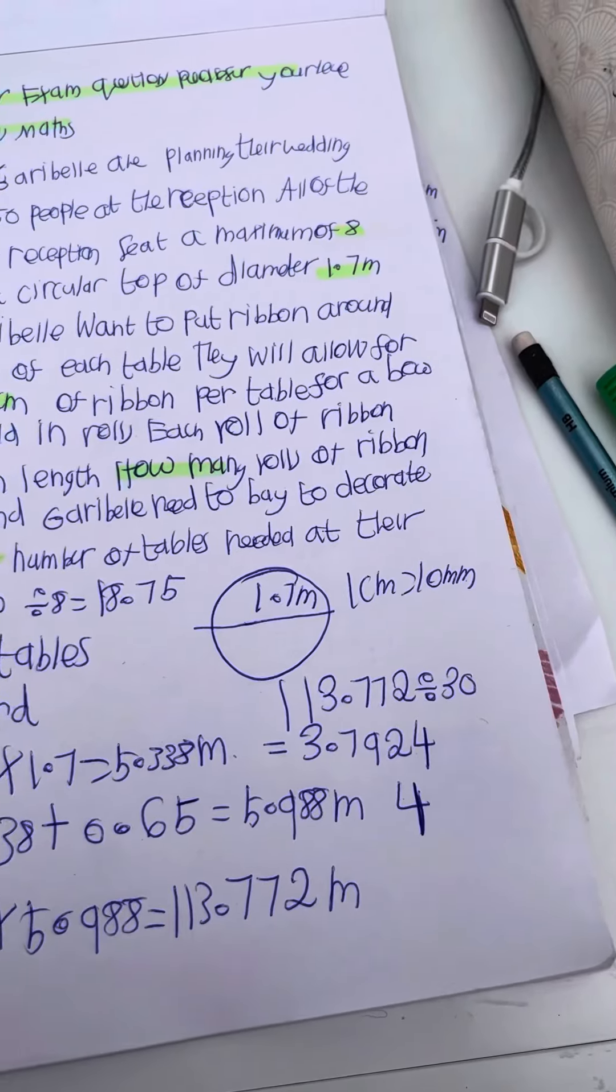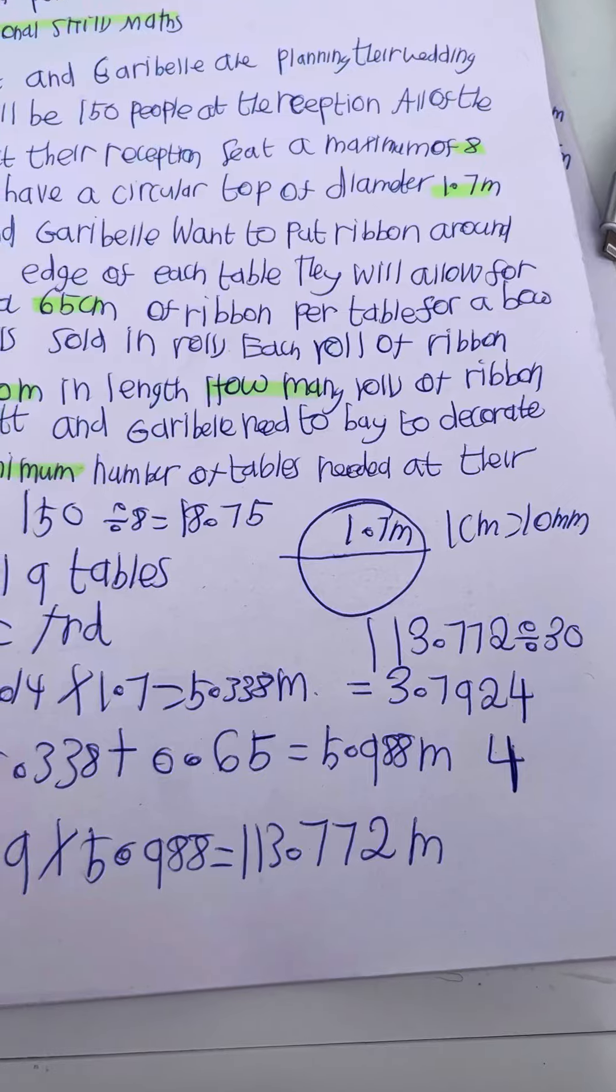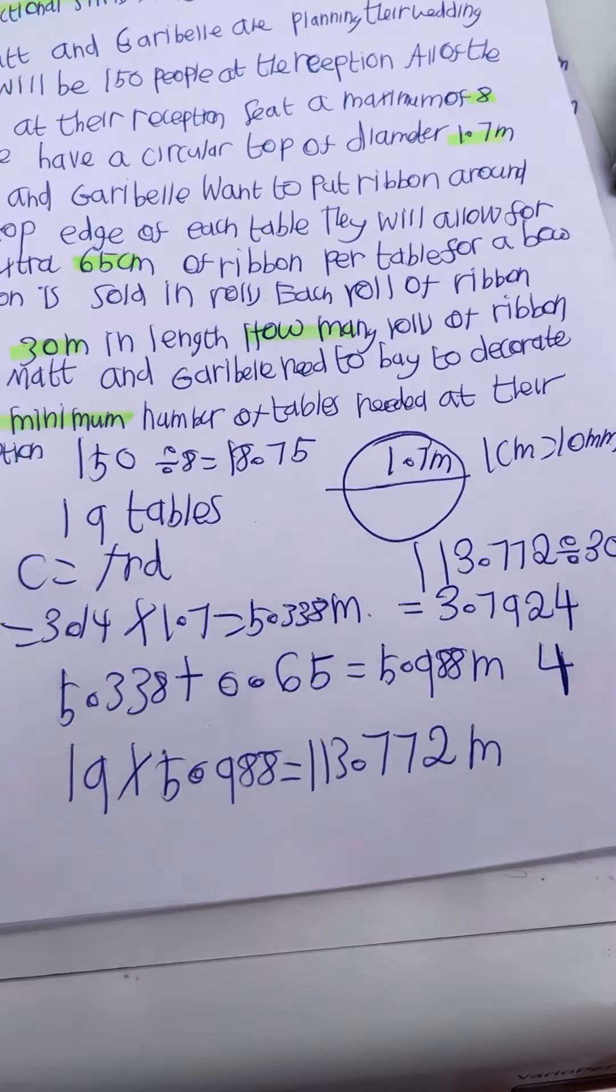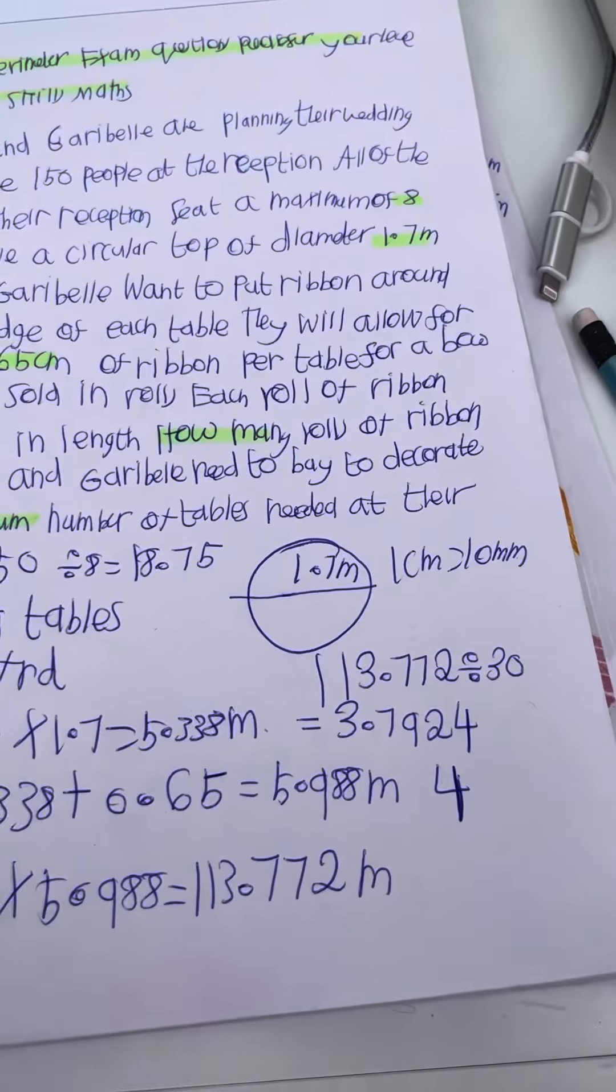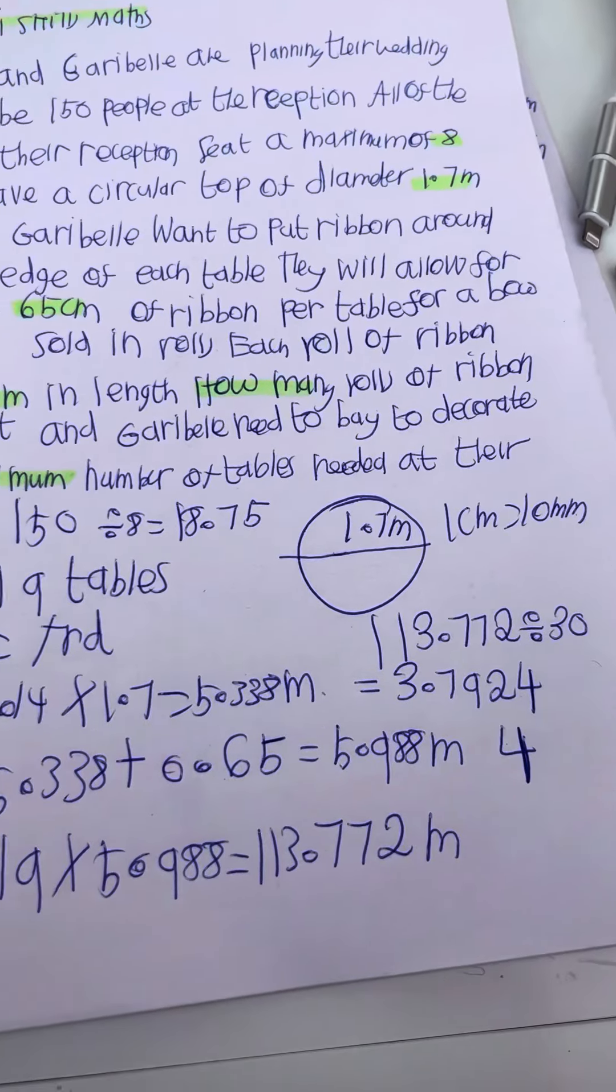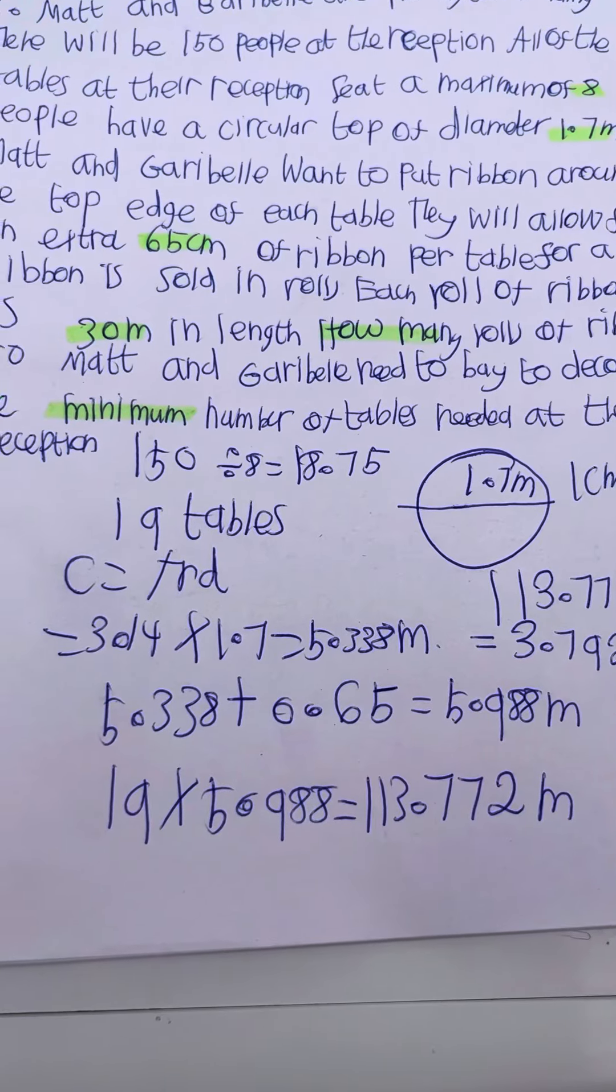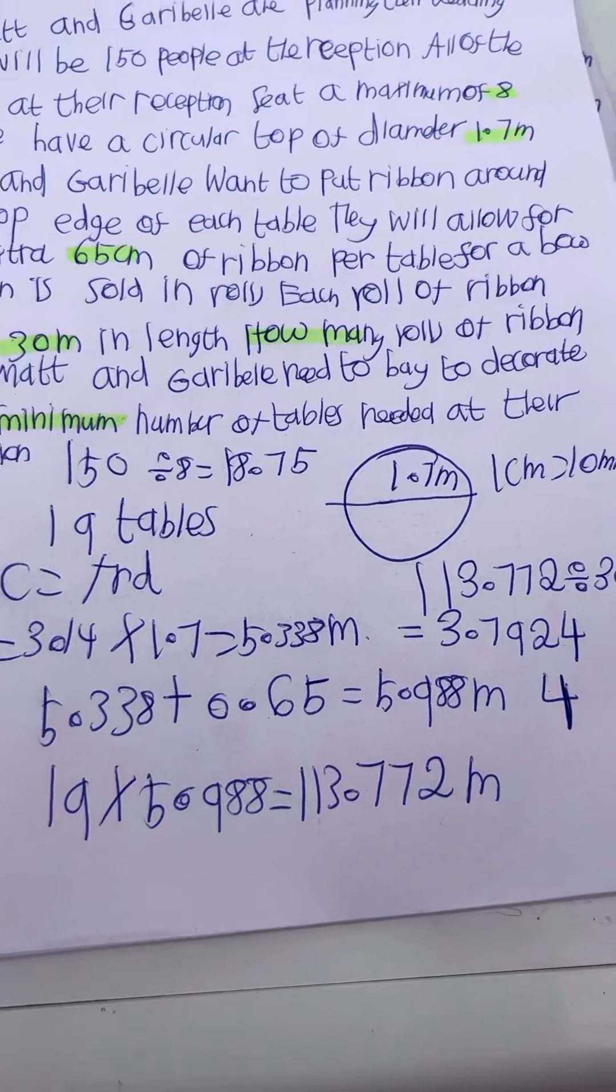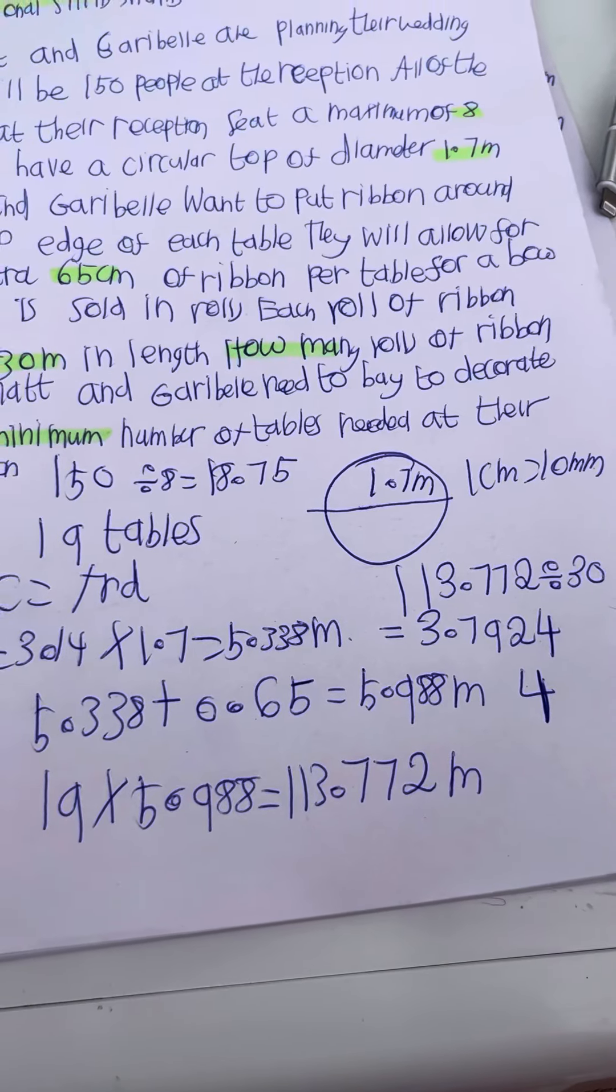3.14 times the diameter 1.7 equals 5.338 metres. Then if we add 0.65 metres for the bow, 5.338 plus 0.65 equals 5.988 metres per table.